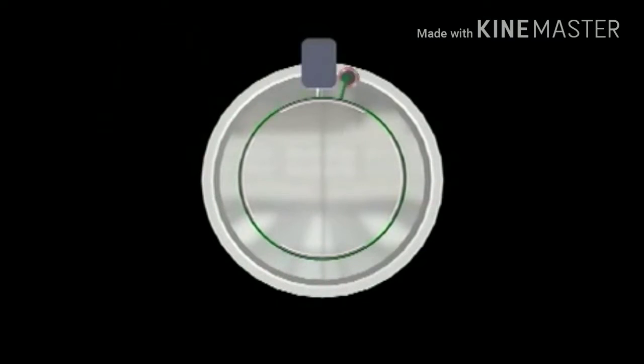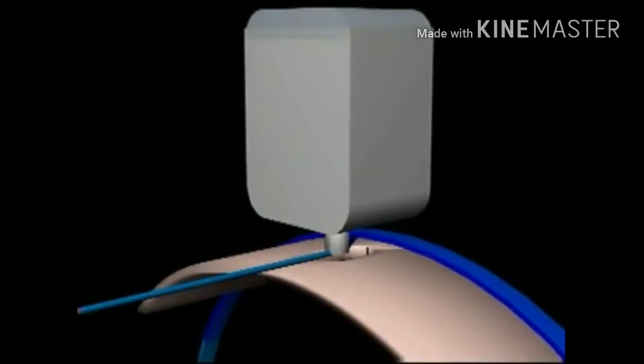Settings for the measuring drums control the amount of weft stored and the length of each inserted pick. The measuring drums also control the start of weft insertion.